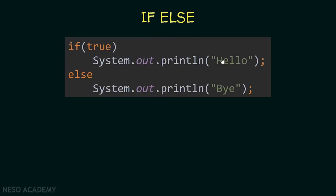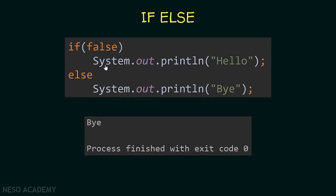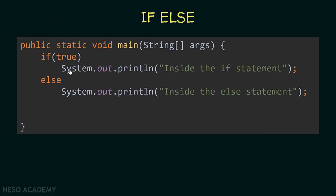Let's see an example. If the condition is true, we print 'hello', and if not, we print 'bye'. In this case we will see 'hello' printed because the condition is true, so the if statement executes and the else does not. Now if the condition is false, the if statement will not execute, and the else statement will execute, so we will see 'bye' printed.